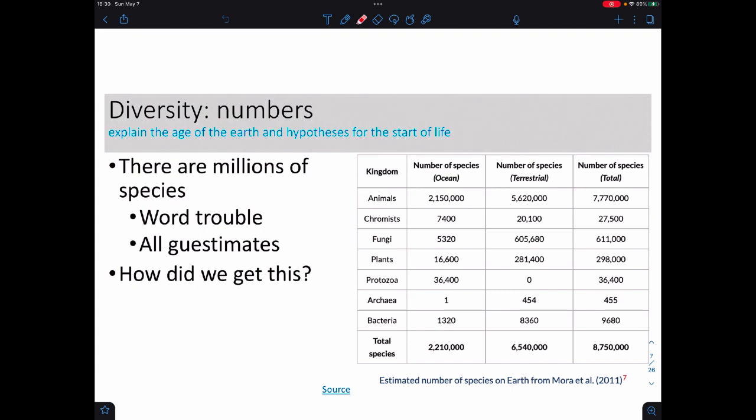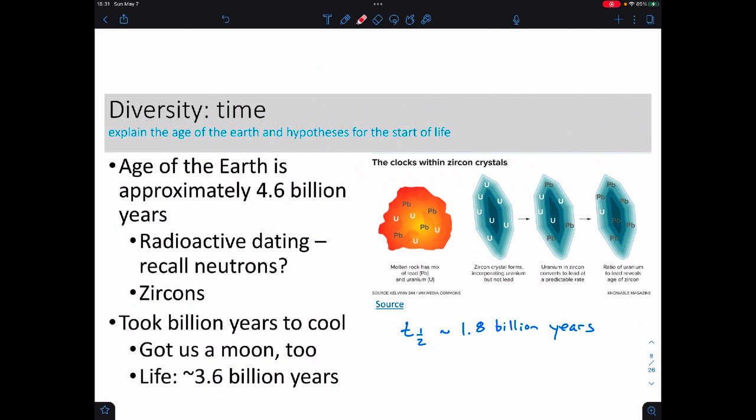When we look at the diversity of life that's out there, there's a lot of species. We're using the word species and these are all guesstimates. I've shown you different estimates from different sources before. One of the good questions to ask would be how do we get this many different species, and in order to deal with that we need to address how old is the earth.